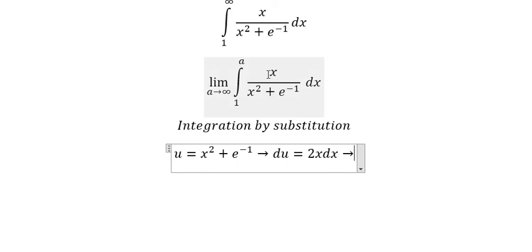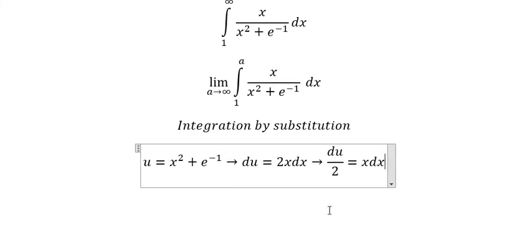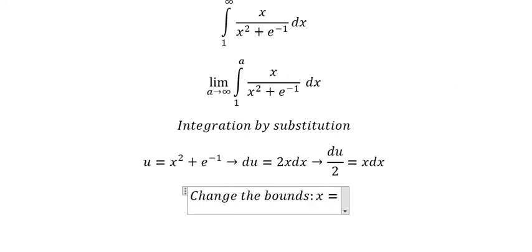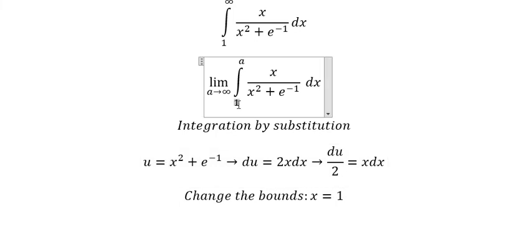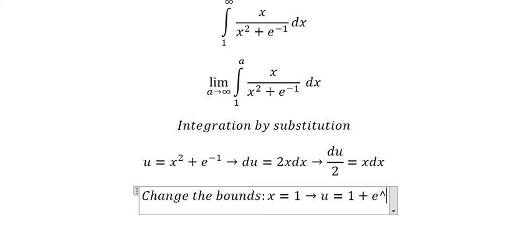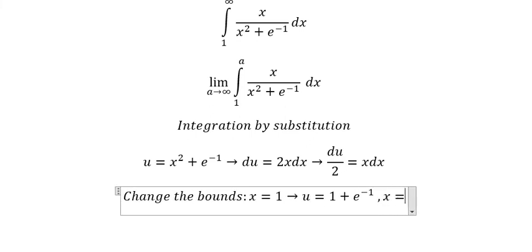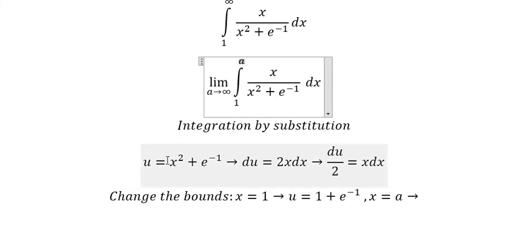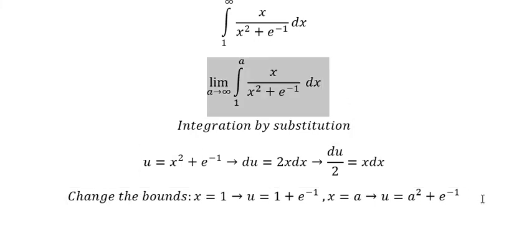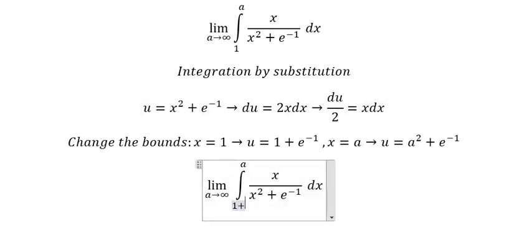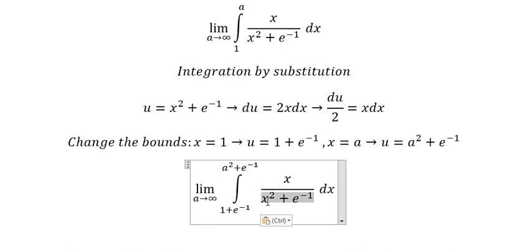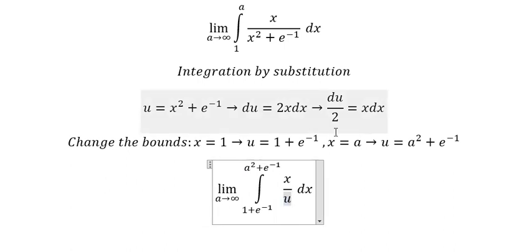Because we don't have a factor of two here, we divide both sides by two. Next we need to change the bounds. When s equals one, u equals one plus e to the power of negative one. When s equals a, u equals a squared plus e to the power of negative one. We then substitute: the lower bound changes, the upper bound changes, and ds is replaced accordingly.